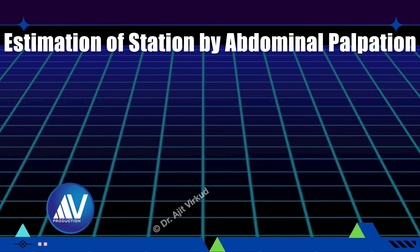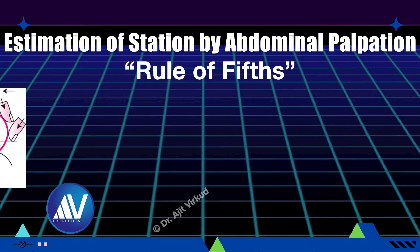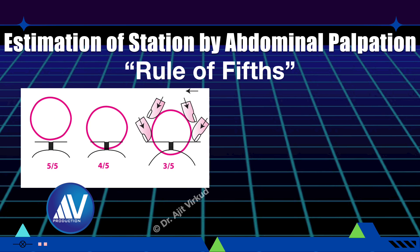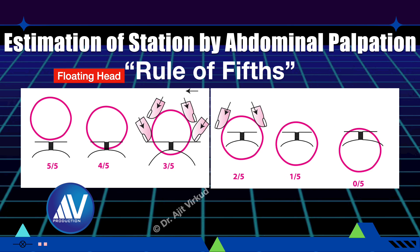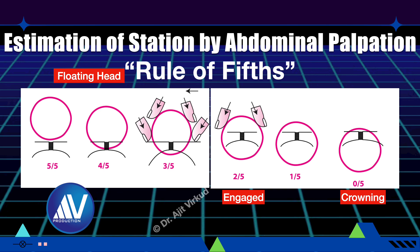This diagram illustrates how to estimate station of fetal head by abdominal palpation using the rule of fifths. The aim is to assess how much of the fetal head lies above the pelvic brim, using fifths of the head as the measuring unit. When the head is five-fifths, four-fifths, or three-fifths above the pelvic brim, the head is considered to be floating. When two-fifths or less is palpable above the brim, the head is considered engaged. At crowning, no part of the head will be palpated per abdomen.